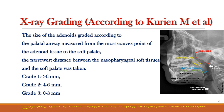The next X-ray grading is according to Korean M et al. In this system, the size of the adenoid is graded according to the palatal airway, measured from the most convex point of the adenoid tissue to the soft palate. The narrowest distance between the nasopharynx soft tissue and the soft palate is taken into account. In grade one, the distance is more than 6 mm; in grade two, it is 4 to 6 mm; and in grade three, it is 0 to 3 mm, where the airway is nearly completely occupied by the adenoid tissue.